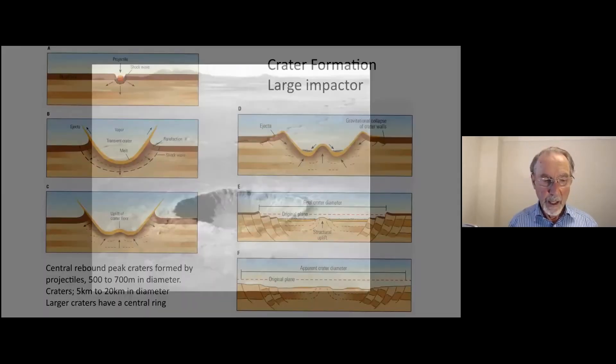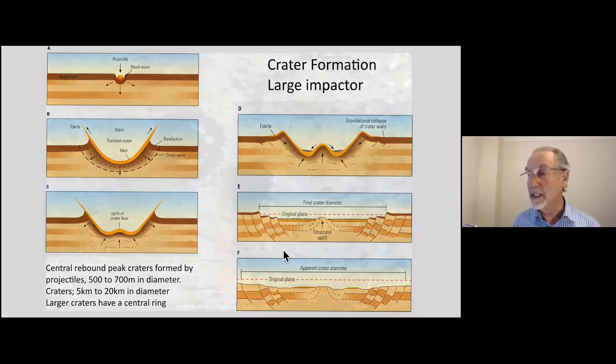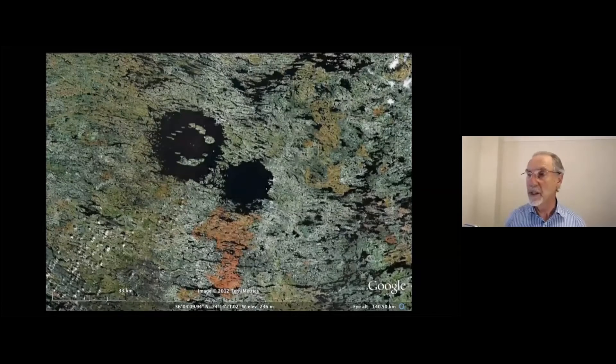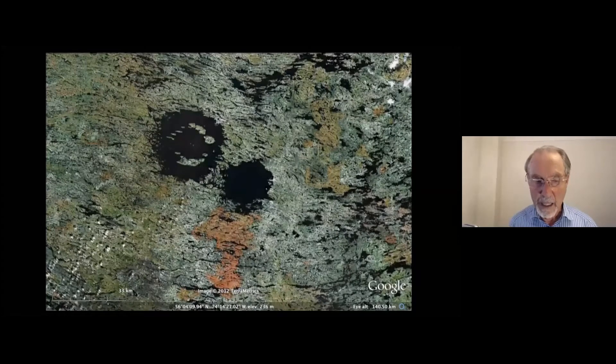Now, for impactors between 500 and 700 meters in diameter, they will form craters from maybe 5 to 20 kilometers in diameter. And what we see here is two things, a rebound, and then we see a subsequent slumping of material enlarging the crater within days after the event. If we have larger craters, then instead of a simple bump in the middle, we get a ring, as you can see in this example here. These are 32 kilometers in diameter, they're about 290 million years old in Canada, and they were formed simultaneously.